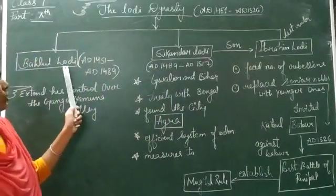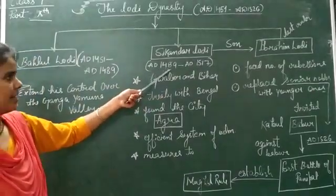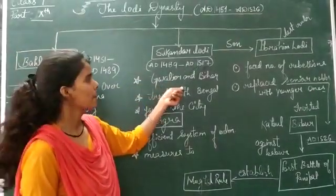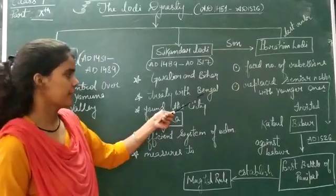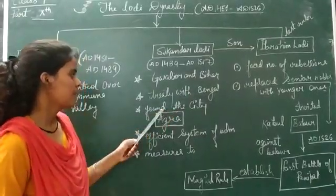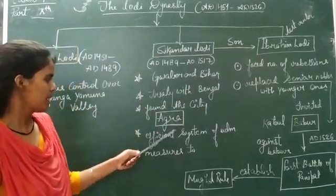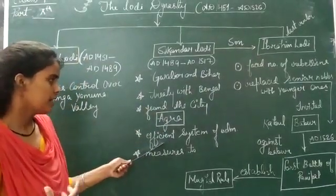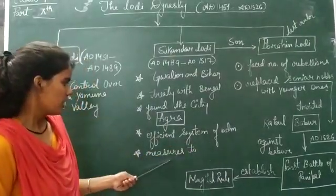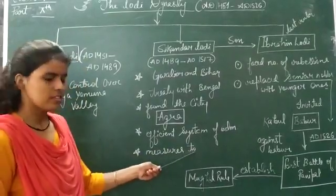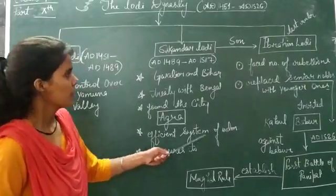After Bahlul Lodi, Sikandar Lodi came to rule. His time period was AD 1489 to AD 1517. He made a treaty with Bengal, founded the city of Agra, and created an efficient system of administration. He also took many measures to increase agricultural production.